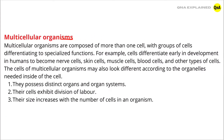Multicellular organisms are composed of more than one cell, with groups of cells differentiating to specialized functions. For example, cells differentiate early in development in humans to become nerve cells, skin cells, muscle cells, blood cells, and other types of cells.